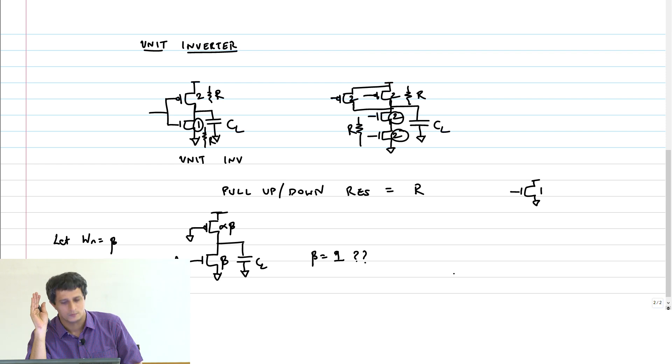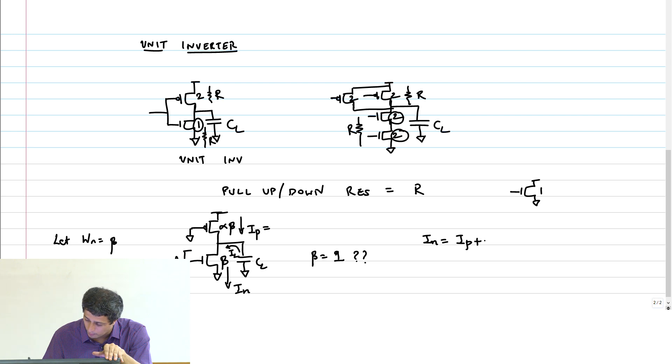In the pull down case, I have some current coming from my PMOS transistor always. If my input instantaneously went from 0 to 1, there is a current IP coming from the PMOS transistor, and there is a current flowing to the NMOS transistor IN. What is going to be available to discharge the load capacitor? IN minus IP. So I have to look at what this current is. Clearly IN equals IP plus IL.